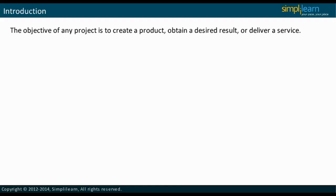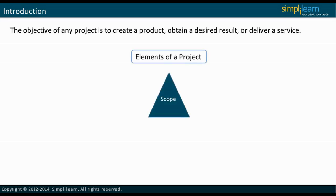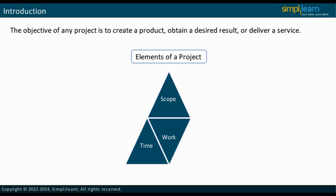The objective of any project is to create a product, obtain a desired result, or deliver a service. To meet this objective, a project manager needs to define the scope, the work that needs to be performed, and the time by when the work should be completed. The project manager also needs to define the cost of the project. Cost includes the material, equipment, and resources, or people, who will work on the project.